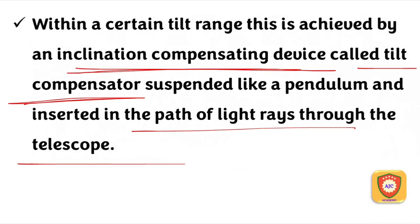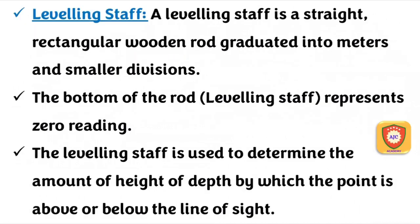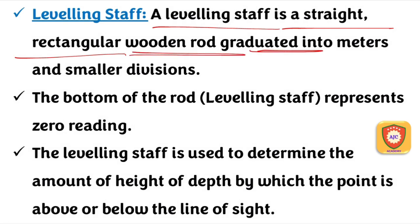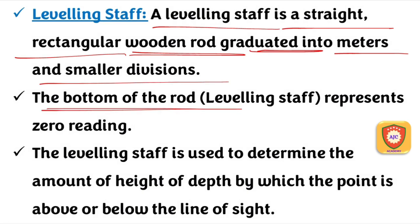We use different types of level instruments with a leveling staff. The leveling staff is a straight, rectangular-shaped wooden rod. It has graduation readings in meters, and small divisions are present. The bottom reading is 0.